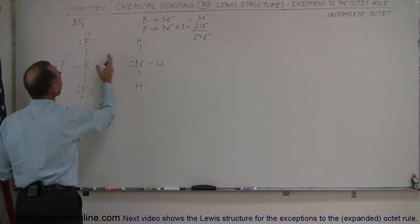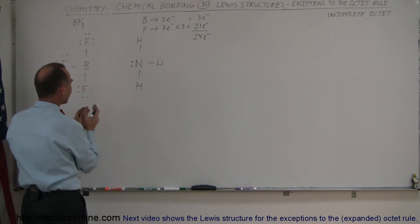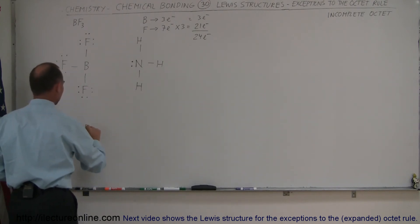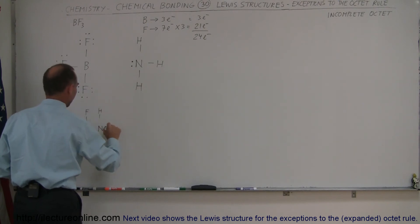part of the bond between boron and nitrogen. When they come together, the molecule will look like this: boron with the three fluorines, forming a bond with the nitrogen and having the three hydrogens like that.